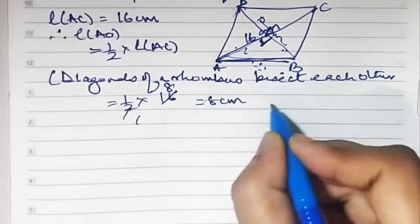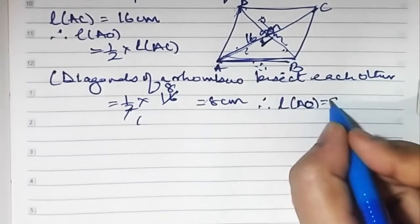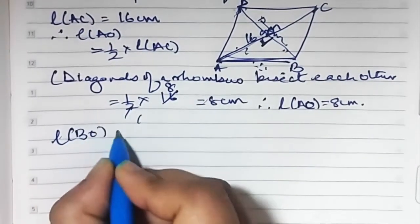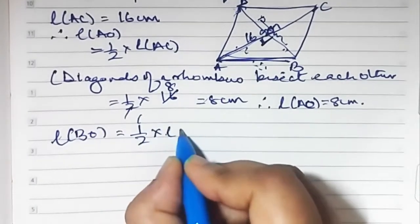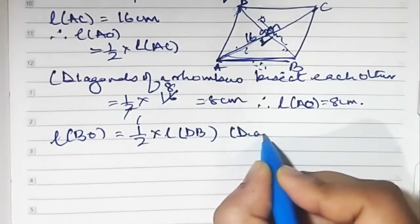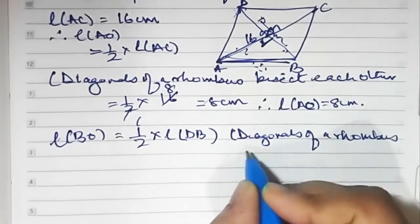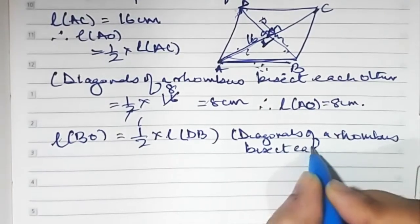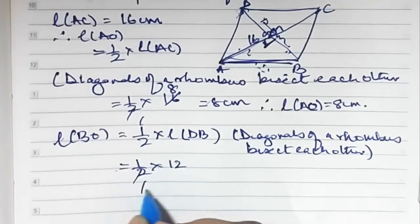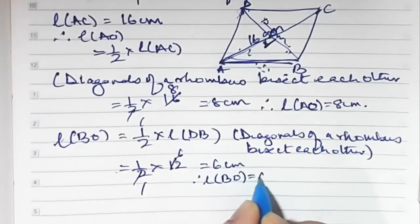Therefore AO is 8 centimeters. Length BO is half of BD. By the same reason — diagonals of a rhombus bisect each other — BO is equal to half of 12, which is 6 centimeters. Therefore BO is 6 centimeters.